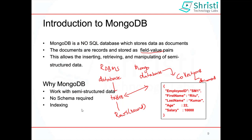A few differences between RDBMS and MongoDB: RDBMS works only with structured data, while MongoDB can work with semi-structured data. In RDBMS a proper schema is required; in MongoDB you can work with or without a schema. What is common between them? Indexing, CRUD operations, and aggregation are all possible in both. There are also advanced concepts in MongoDB like sharding and replication, but those are out of scope for this video.